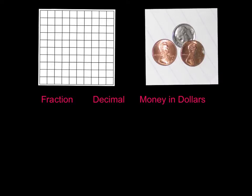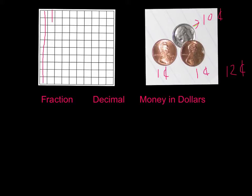On this next one, we have a few more cents. For students who are new to the country and just learning: we have ten cents from the dime, one cent from a penny, and one cent from another penny — so ten, eleven, twelve cents. We have a total of twelve cents, or twelve one-hundredths. On our chart, we're going to take ten of these boxes and two more to give us twelve. Our fraction is going to be twelve one-hundredths.